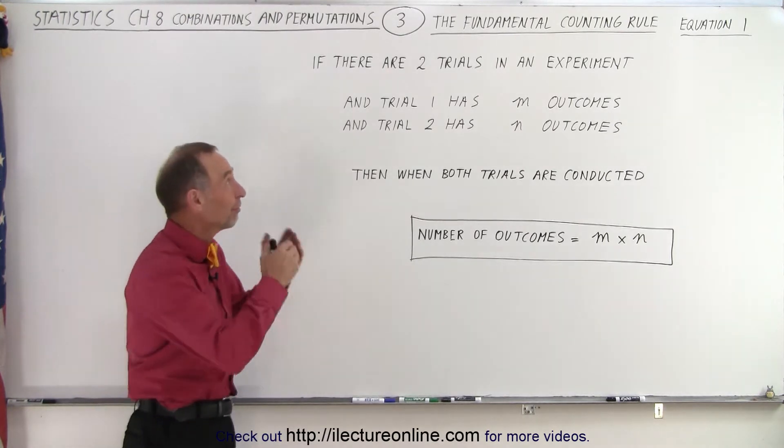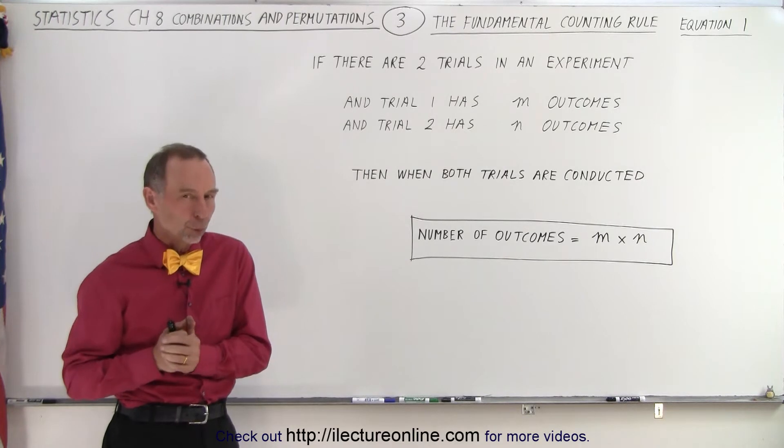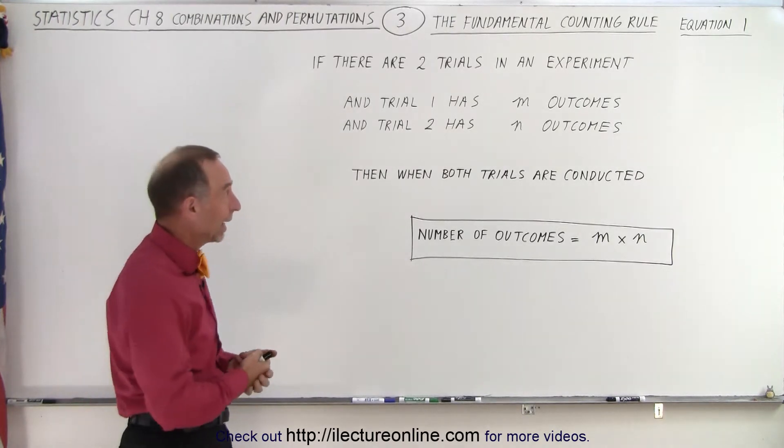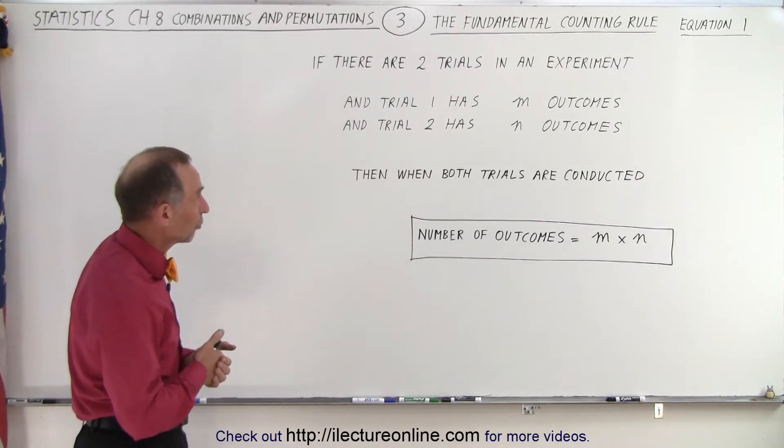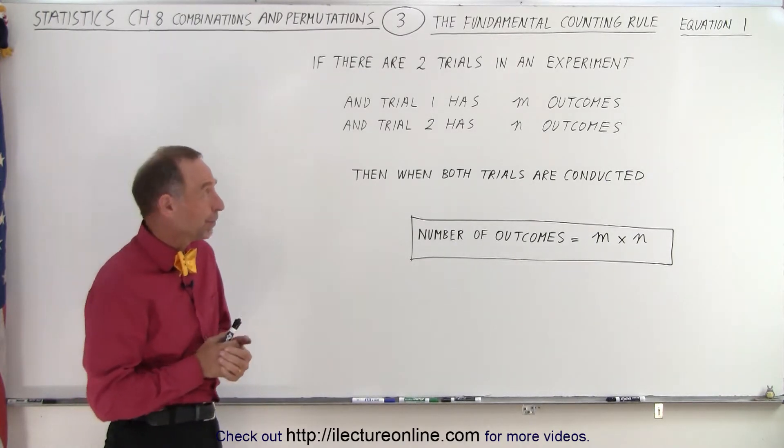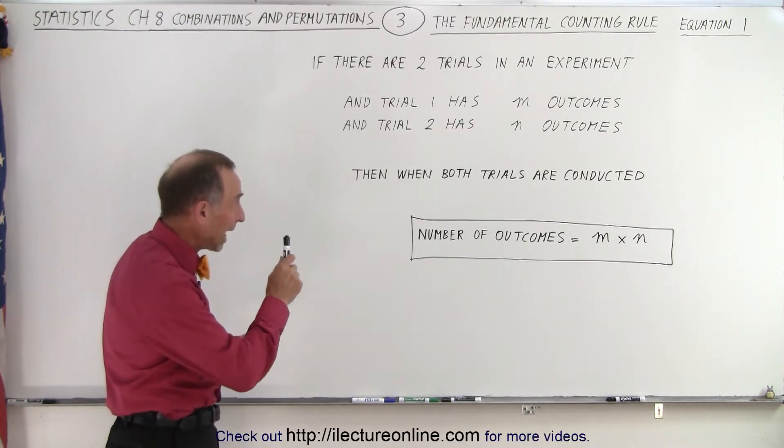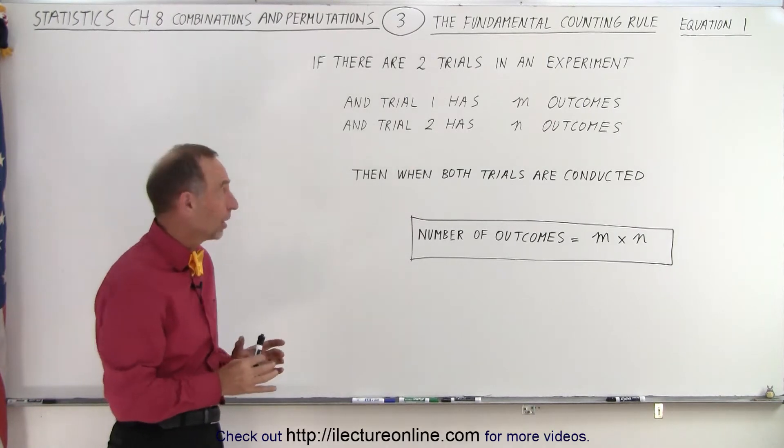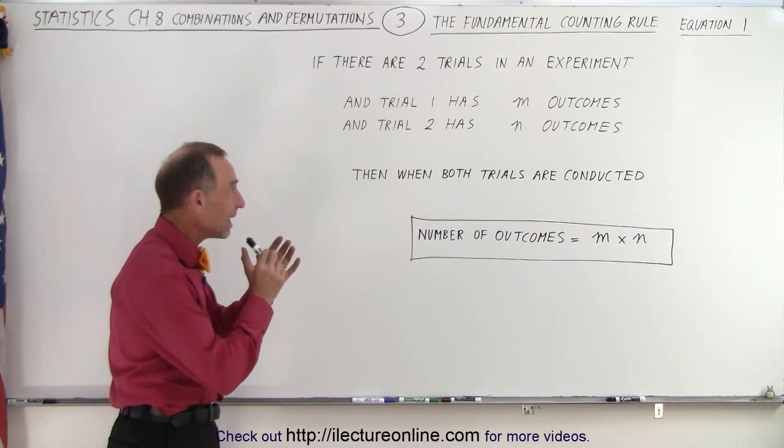Now, here's the fundamental counting rule when it comes to permutations and combinations. If there are two trials in an experiment, and trial one has m outcomes and trial two has n outcomes,